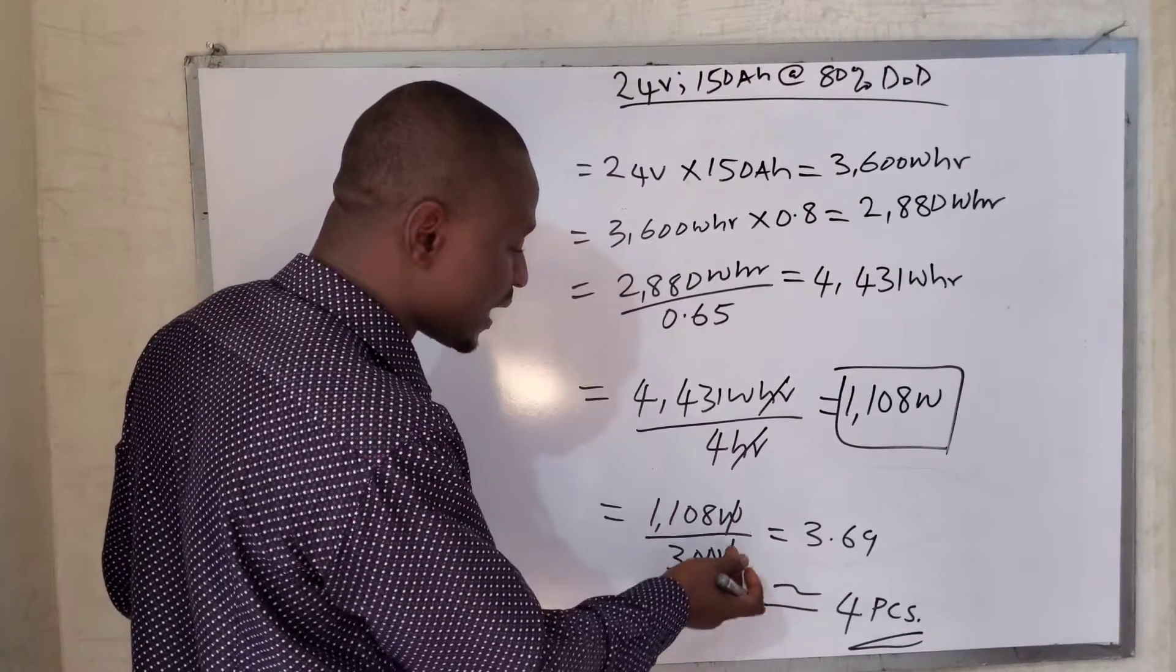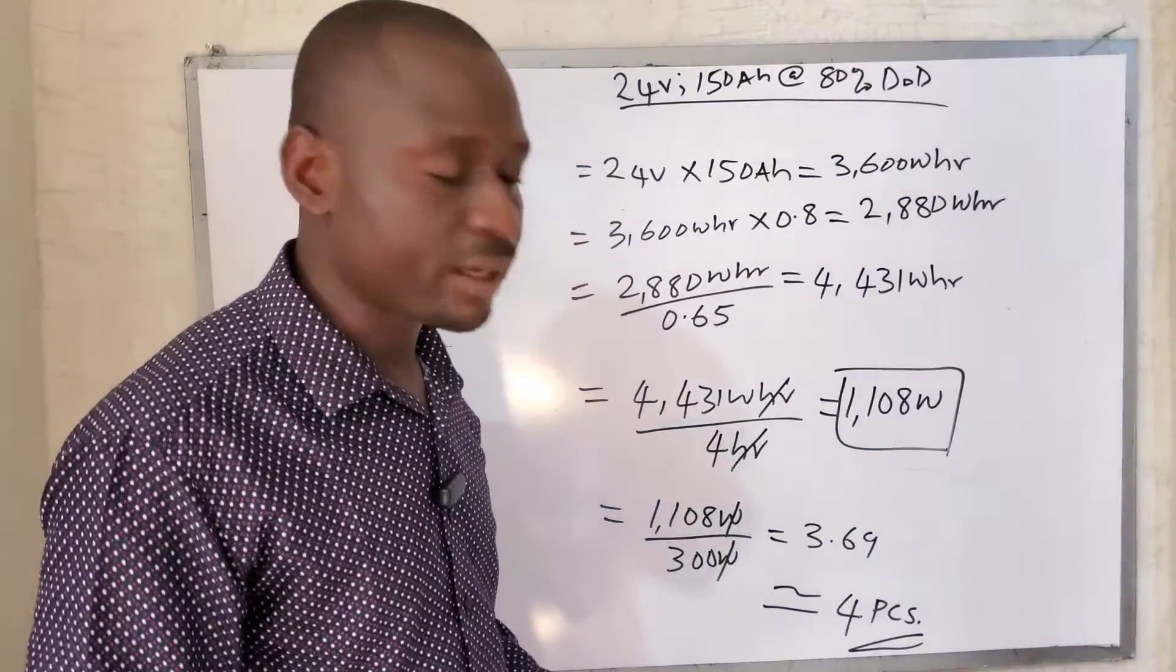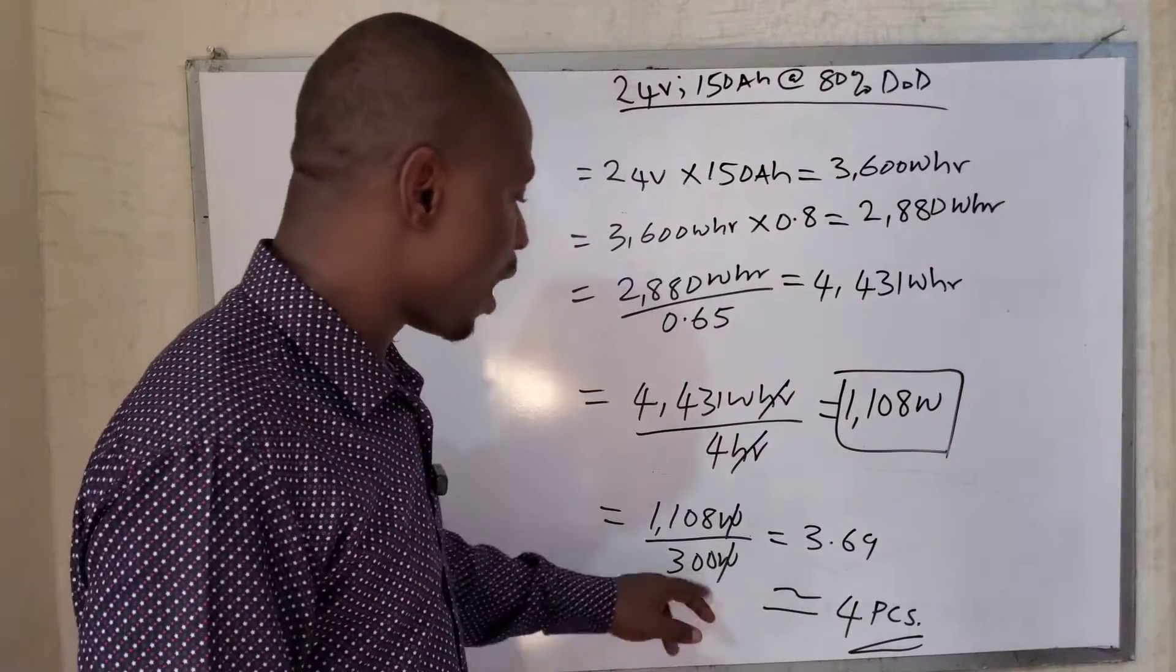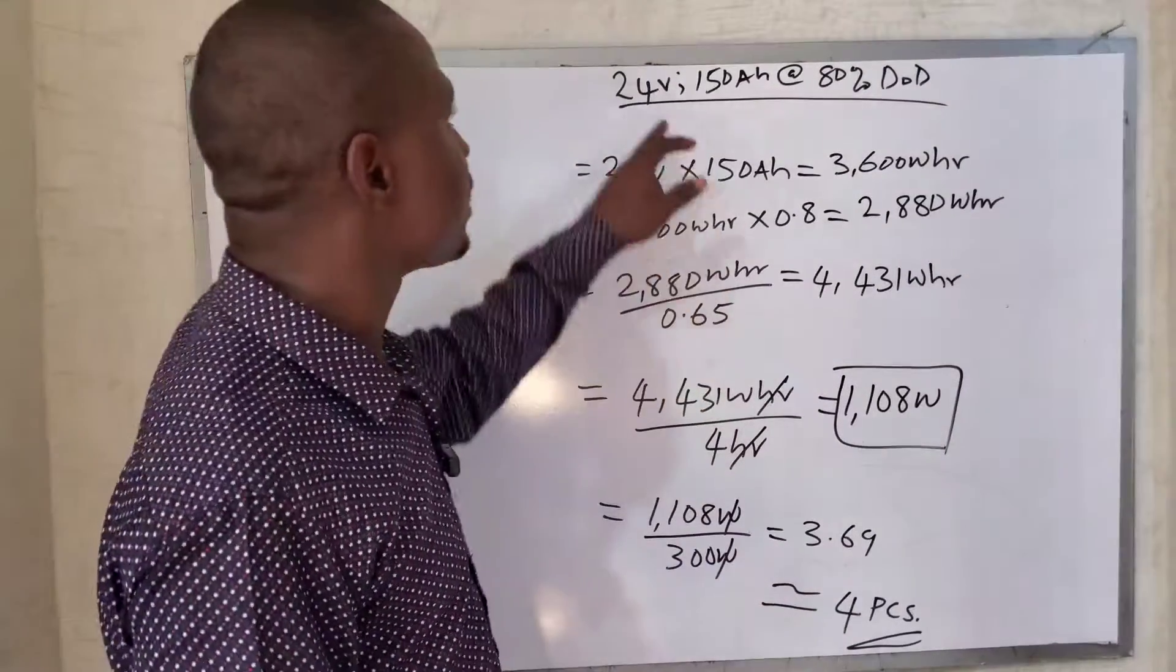1,108 watts divided by 300 watts - the watts will cancel - we'll have 3.69 panels, approximately 4 pieces of 300-watt solar panels to charge our 24-volt 150 amp-hour battery bank at 80% DoD.